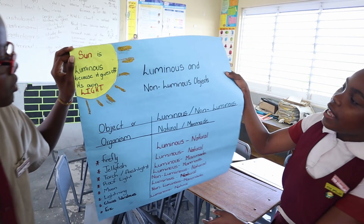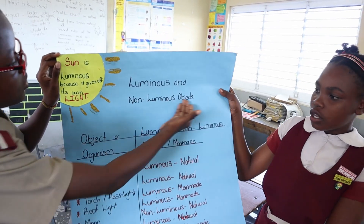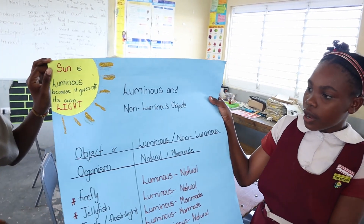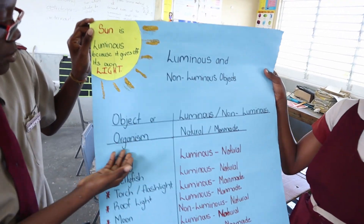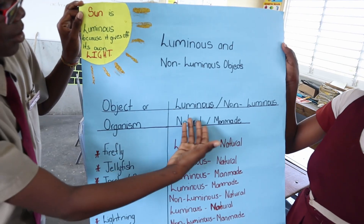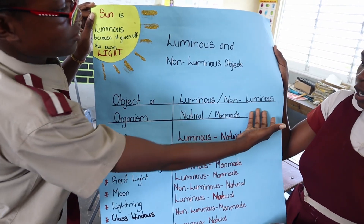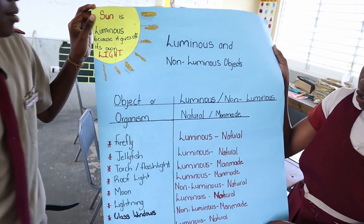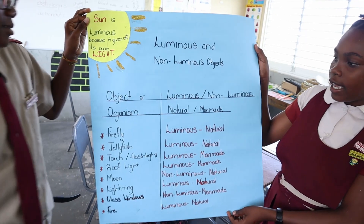Today the topic is luminous and non-luminous objects. Here we have objects or organisms. You must tell whether they are luminous or non-luminous, natural or man-made.